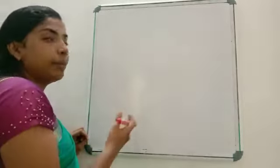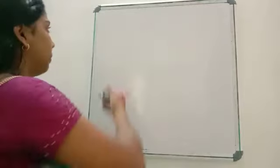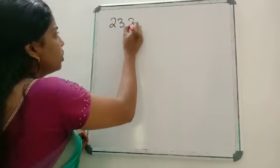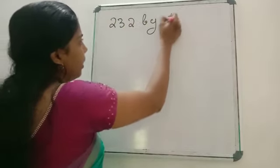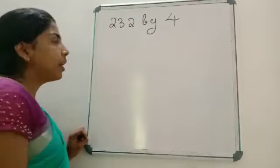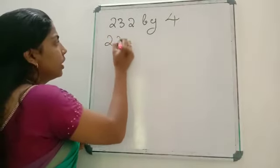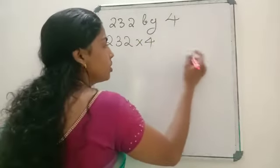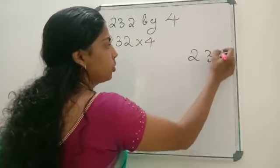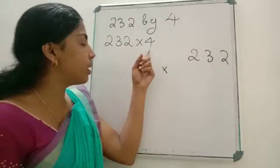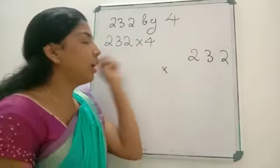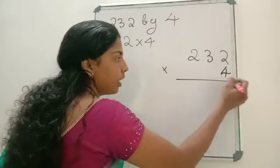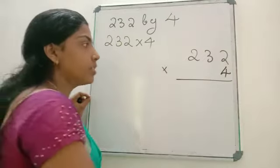Now we are going to do how we can multiply a 3-digit number by a 1-digit number. For example, multiply 232 by 4. We have to rewrite the question: 232 into 4. First write the greatest number, 232, then write the next number with which we are going to multiply, 4, just below the number in the 1's place. Now we are going to multiply this number with 4.